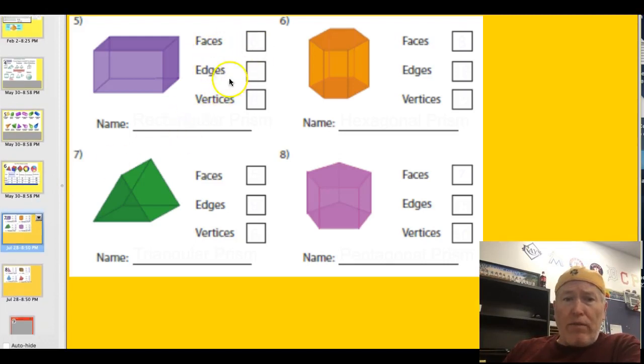Why don't you go ahead and pause the video and see if you can identify the number of faces, the number of edges, and the number of vertices, and the name of each of these polyhedrons here. Go ahead. Let's pause them. Did you get them all written down? Yeah, you didn't have to draw the picture. You can just write the name and the faces, edges, and vertices. That would work.